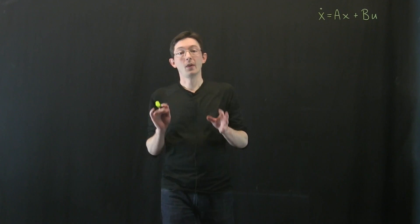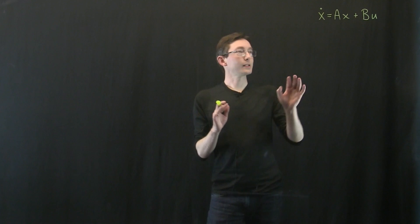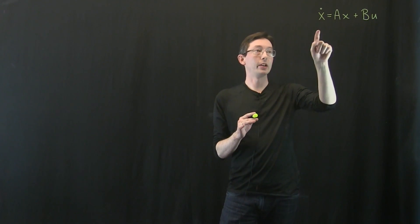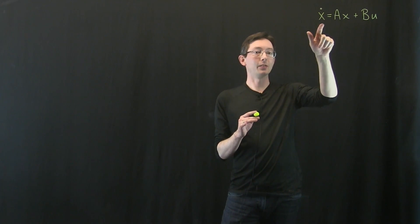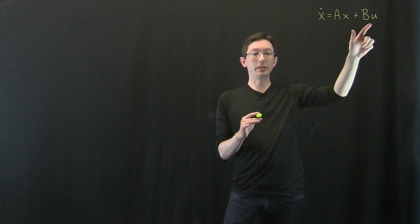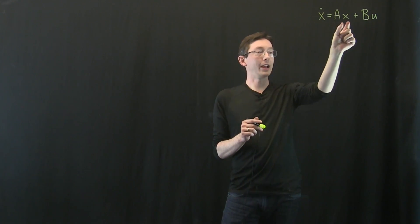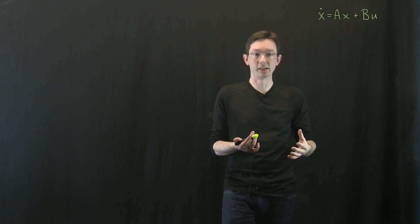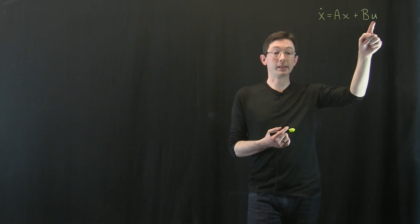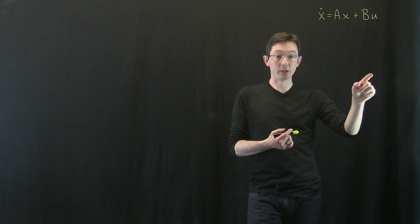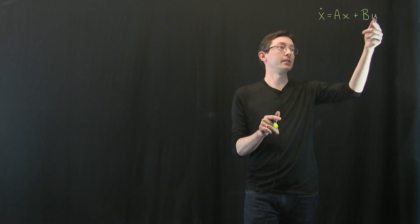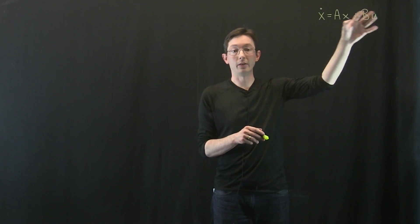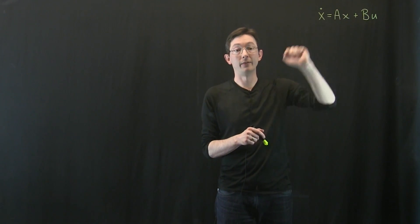Welcome back everyone. Last time we talked about the linear system of equations x-dot equals Ax plus Bu, where x is a state vector that describes the state of a system and u is a set of input signals. These are our control knobs that we can use to hopefully modify the behavior and the dynamics of x.